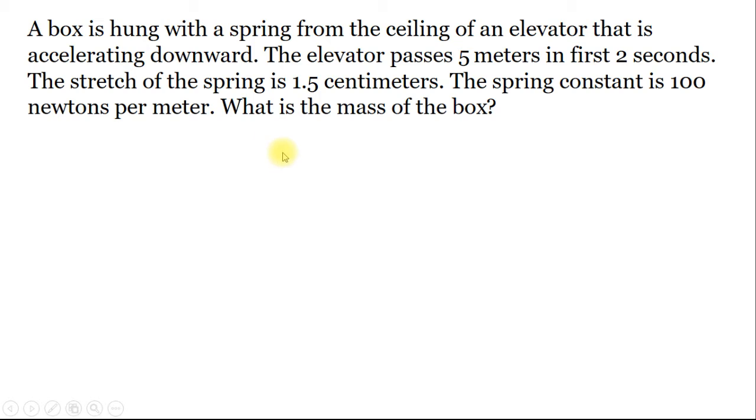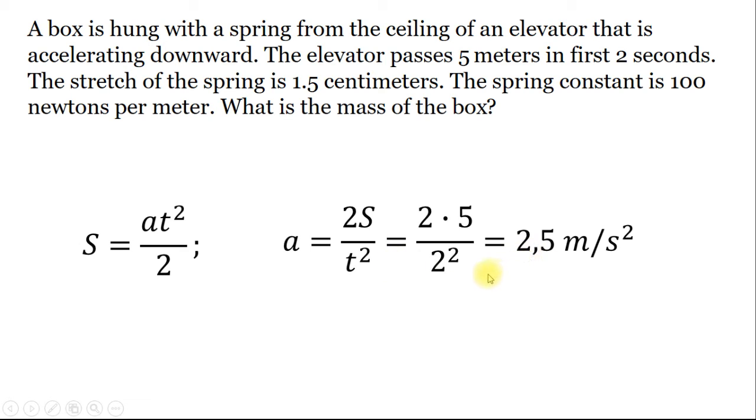We can use the following formula to determine the acceleration, where s is the distance the elevator travels, t is the time of its motion, and a is the acceleration. The acceleration should equal 2s divided by t squared. Now we just plug in the numbers and get the result: the acceleration equals 2.5 meters per second squared.